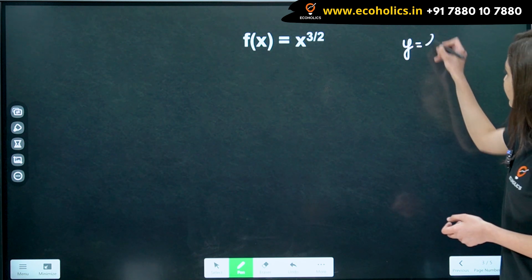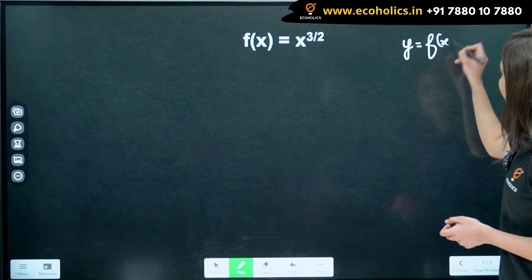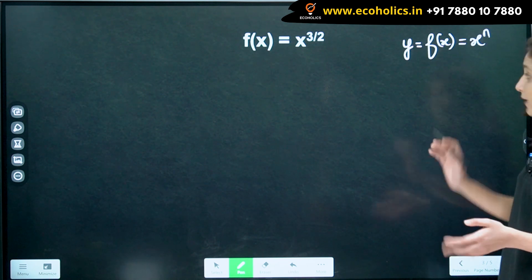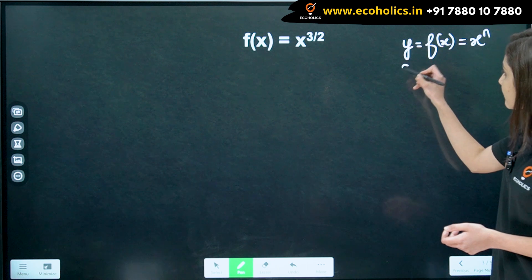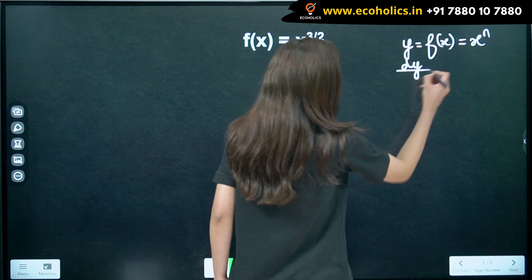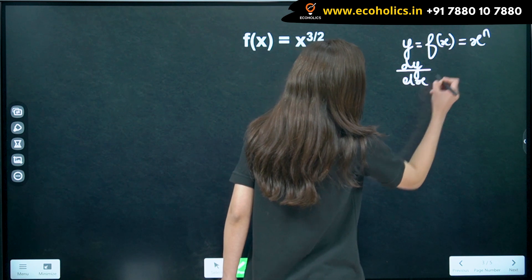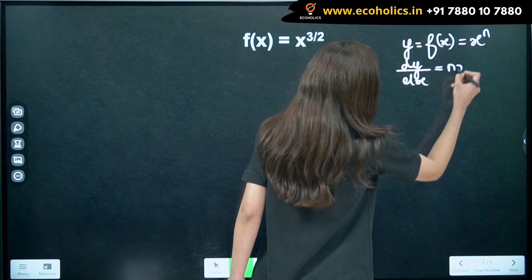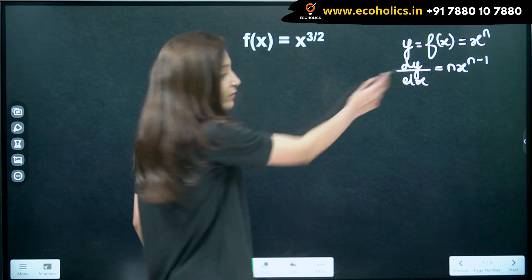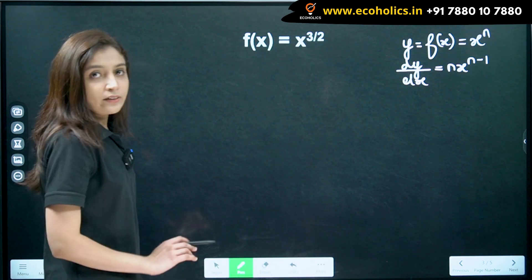y is equal to, when y is equal to x raised to n, in this case, a derivative is nx raised to n minus 1. So, using this formula, we will be calculating this.